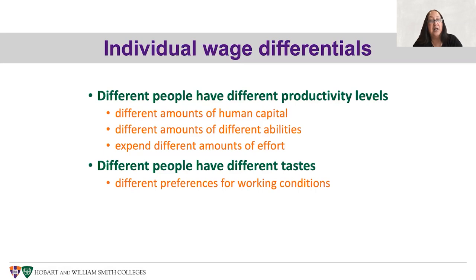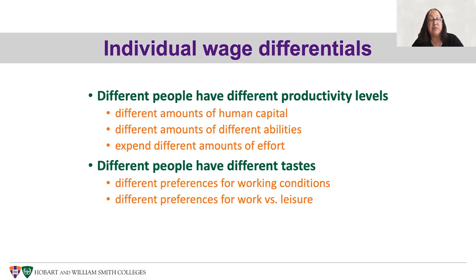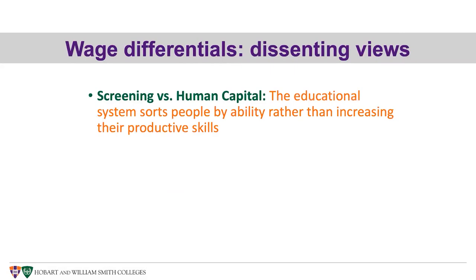Different people also have different tastes. People may have different preferences for working conditions — if very few people want to take a risky job and many people want a safe job, those in the risky job will get paid more to induce people to take on that risk. Another thing is that people have different preferences for work versus leisure, so they are willing to work different amounts and invest different amounts into human capital related to work.